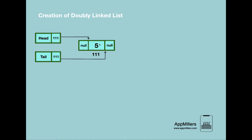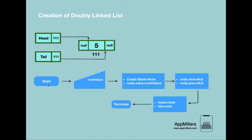So if we put all these steps together, we can create an algorithm for double linked list creation. The algorithm takes node value as a parameter. Then we create a blank node and assign the value from the parameter to it. The next step is setting the next and previous references of this node to null. After that, we create a link between head and this node, and tail and this node. Then we terminate our algorithm. So the creation of double linked list is completed.